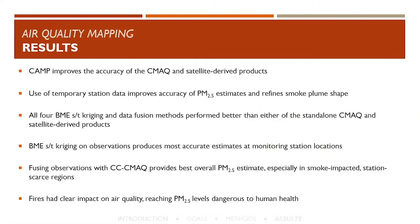To summarize: CAMP improves the accuracy of model and satellite outputs. Temporary station data improves PM2.5 estimate accuracy. All BME methods perform better than standalone model or satellite products. BME kriging on observations produces the most accurate estimates at monitoring station locations, but fusing with the corrected CMAQ model is the best overall estimate — especially in smoke-impacted, station-scarce regions — and gives a nice refinement in smoke plume shape. The fires had a clear impact on air quality, reaching PM2.5 levels dangerous to human health.